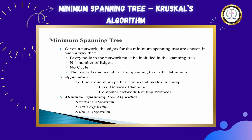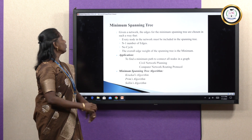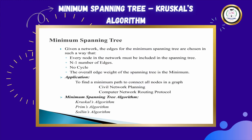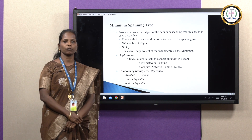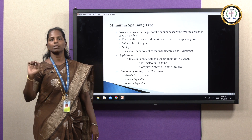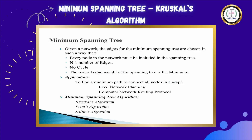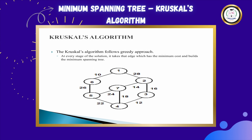The next concept is minimum spanning tree. A spanning tree can be called a minimum spanning tree if the overall edge cost is minimum. The main application of the spanning tree is that it is used in computer network routing protocols and civil network planning. Simply put, if you are having N number of cities and you want to visit all the cities with minimum cost, you can use a minimum spanning tree algorithm. Under minimum spanning tree algorithms, we have 3 algorithms. In today's session, we are going to see Kruskal's algorithm.